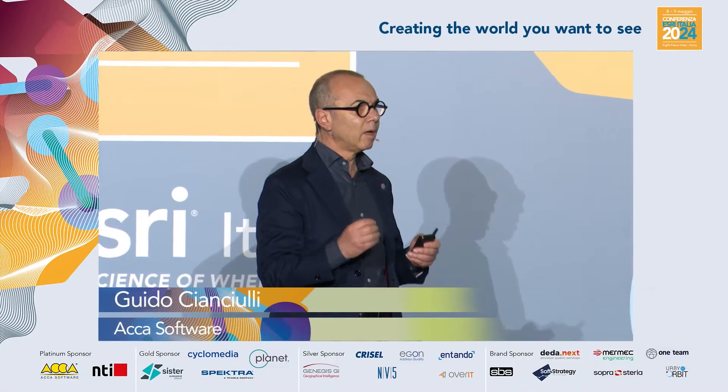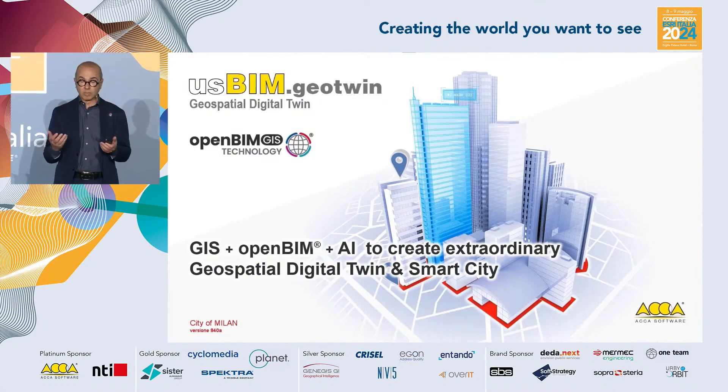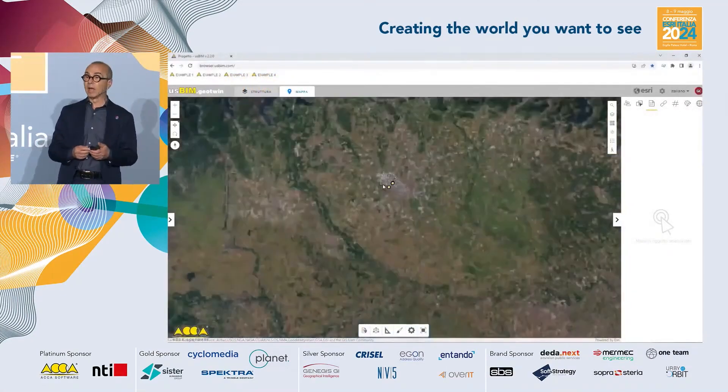It's called GeoTwin, allowing us to integrate GIS — what you've seen just recently — with BIM, especially with OpenBIM, because we are talking about open formats. Formats that can be created by all design software, used freely. We will specifically talk about OpenBIM, and also mention artificial intelligence. All of this put together allows us to create geographical digital twins, geospatial solutions, and smart cities.